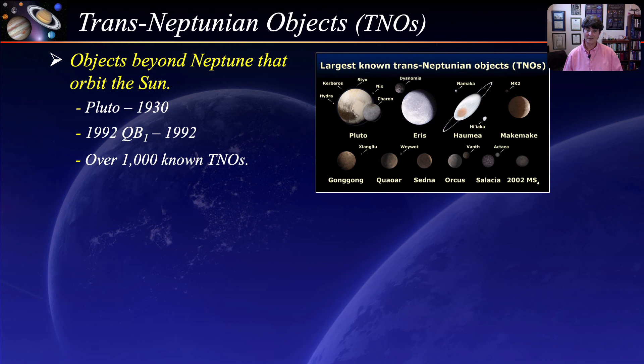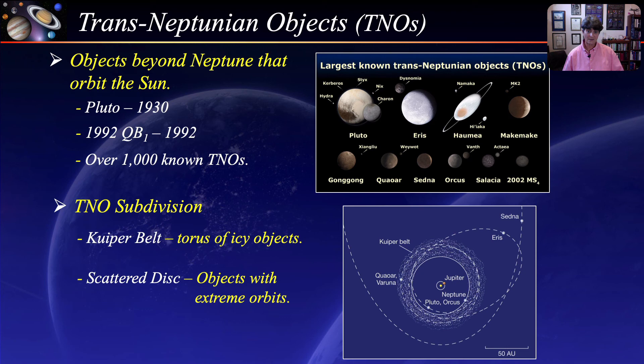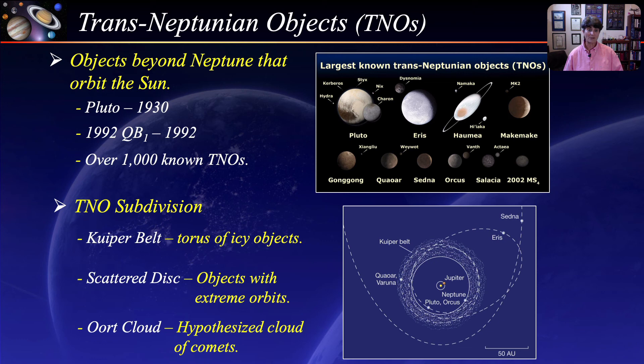Trans-Neptunian objects are further subdivided into objects within the Kuiper Belt — a donut-shaped region of icy objects extending beyond the orbit of Neptune — the scattered disk, a distant region sparsely populated by objects with extreme orbits (the dwarf planet Eris is a scattered disk object), and the Oort cloud, a hypothesized spherical cloud from which comets originate, extending to the far edge of the solar system out to about 10 trillion miles.